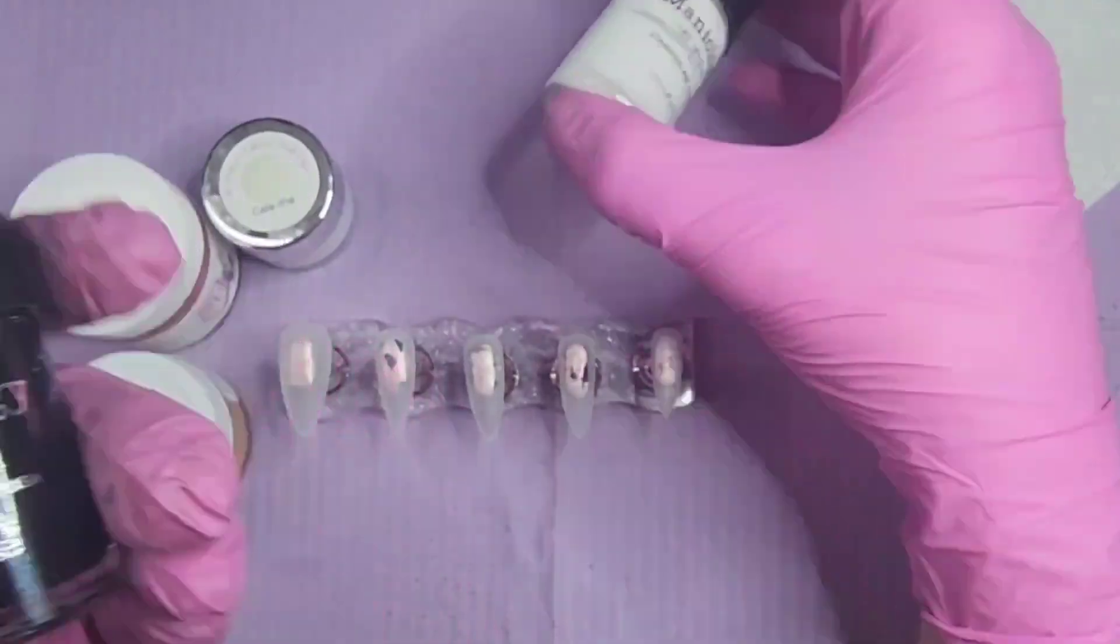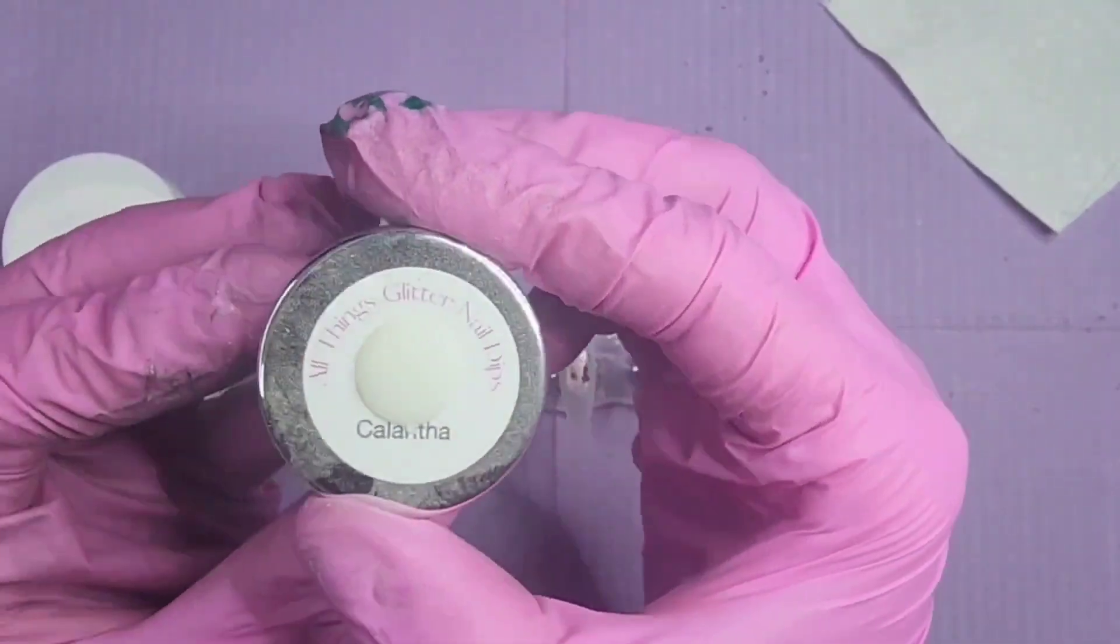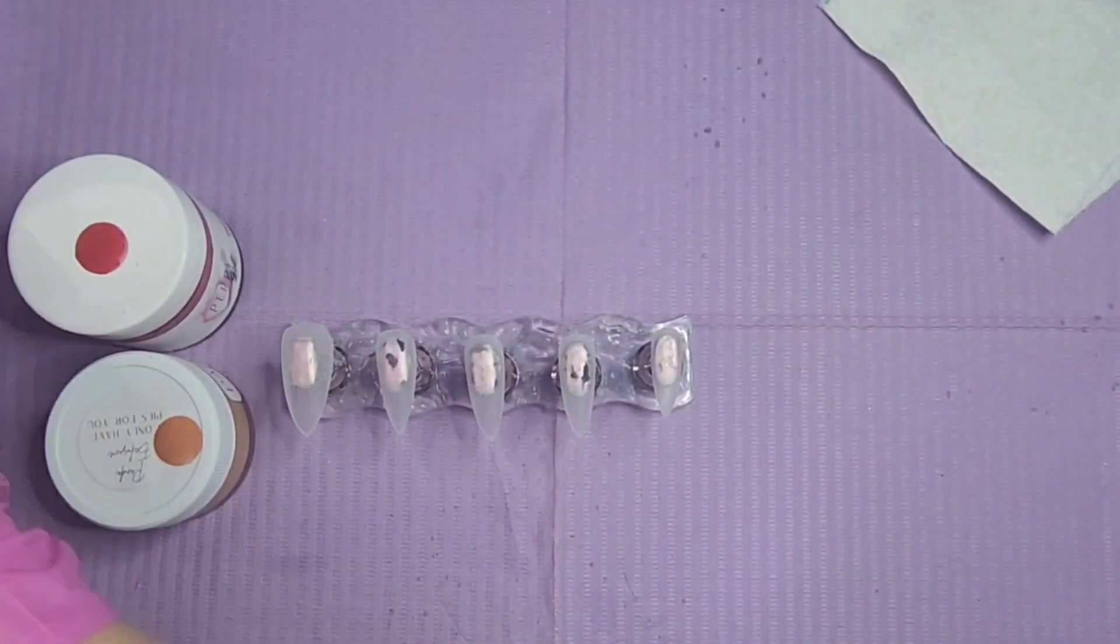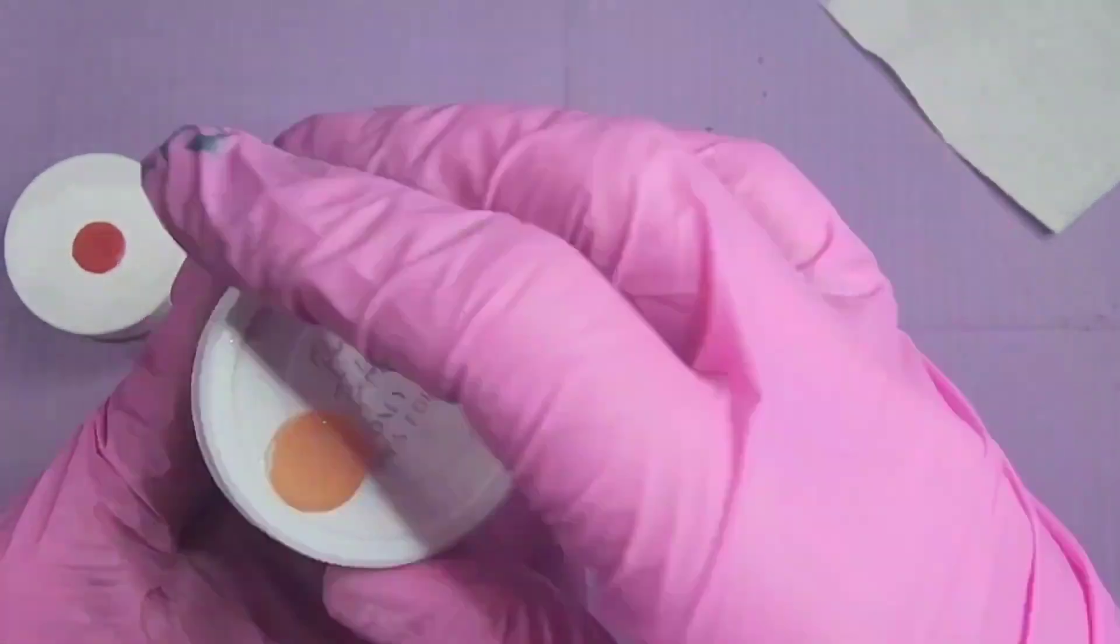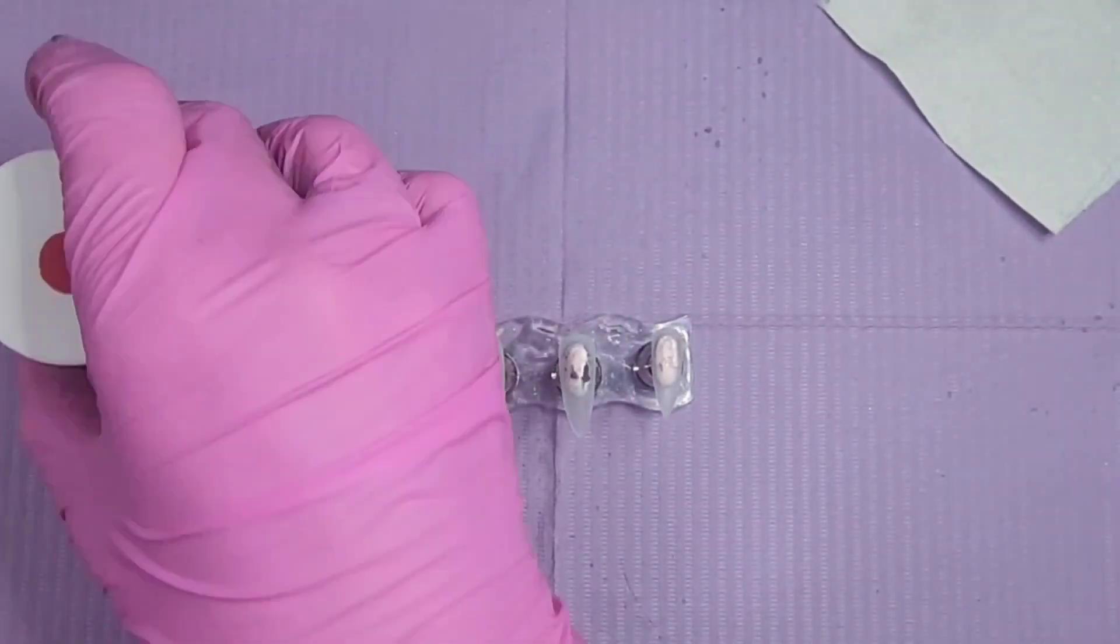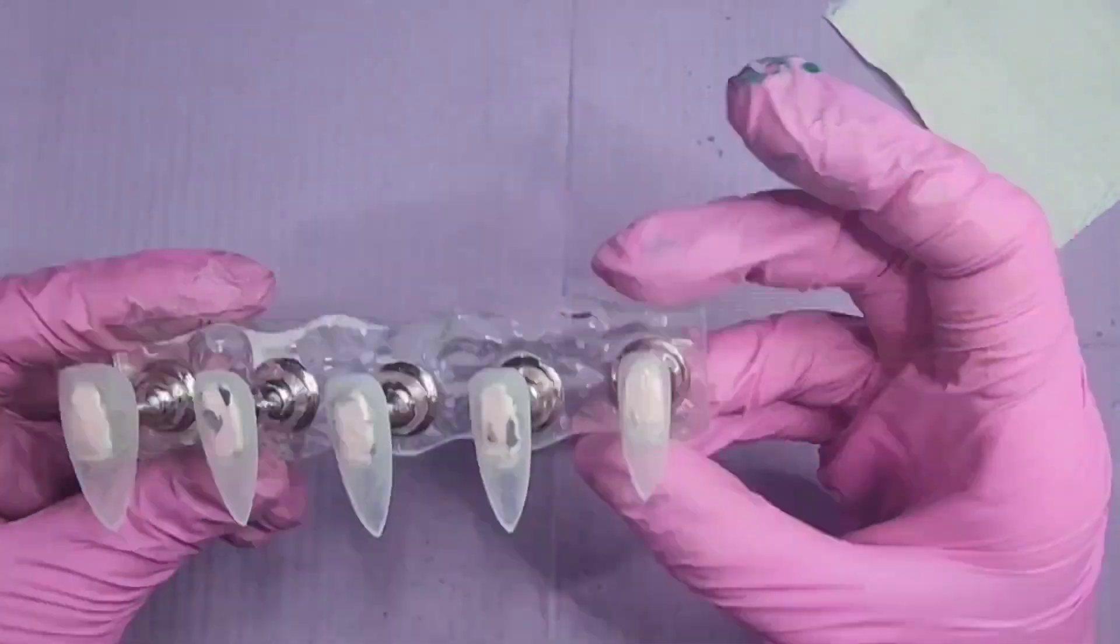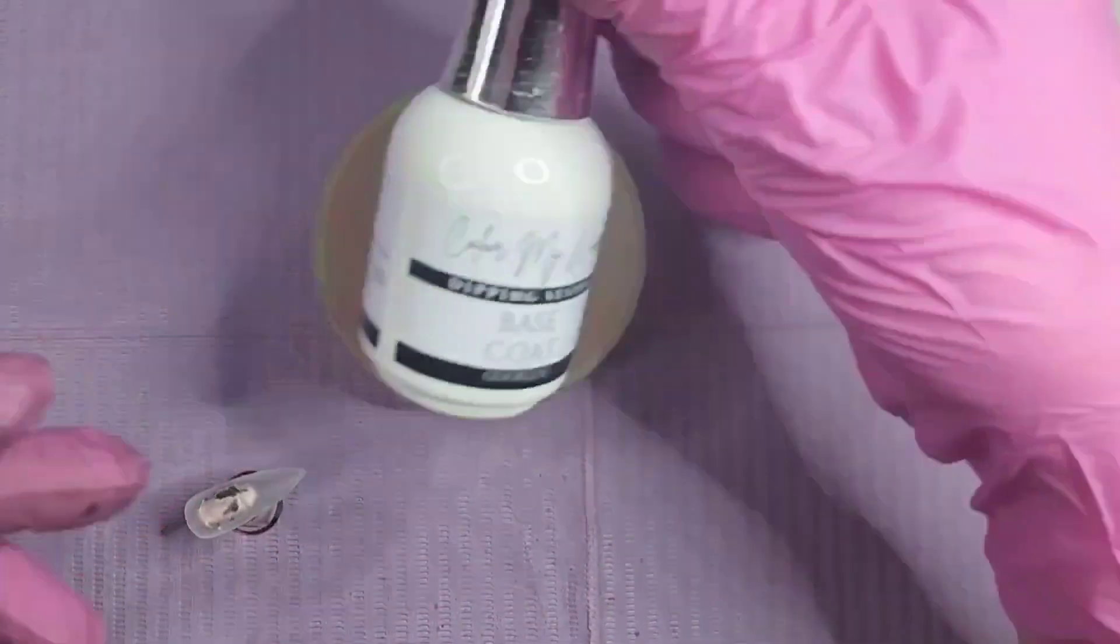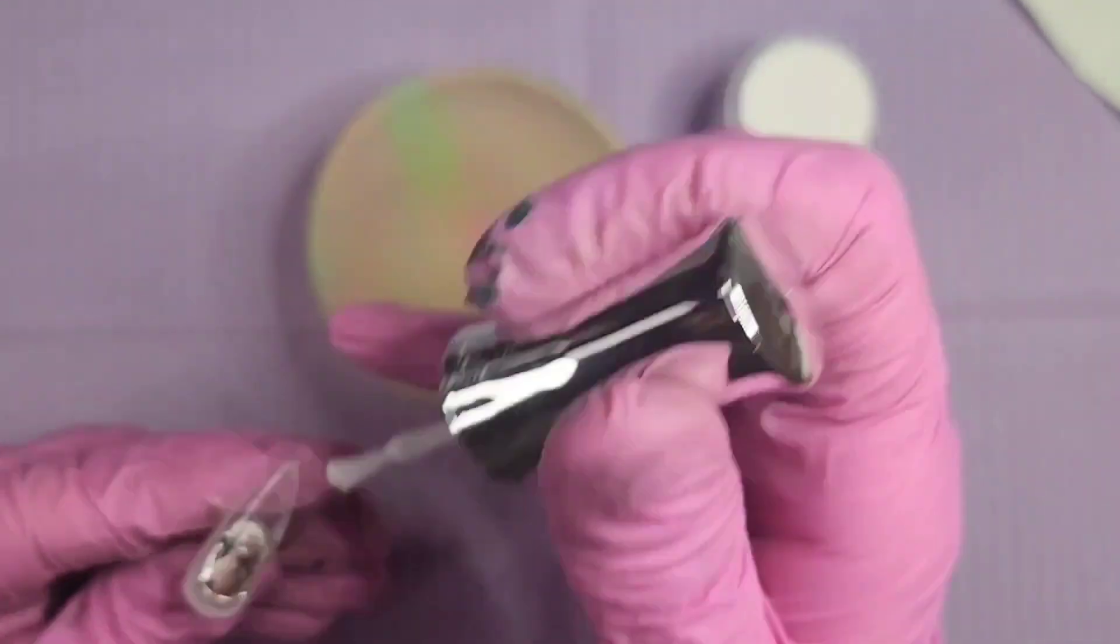This is what we're doing: some nail art with stamping polish, not all stamping, but there will be some stamping. Then we're going to do these gorgeous dips. This one is Wild and Free from Peppy. We're going to do a fall look.